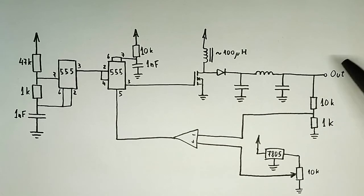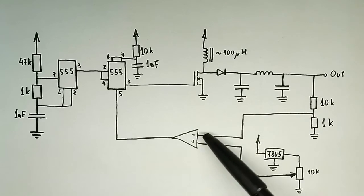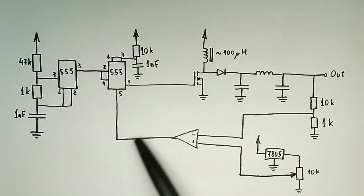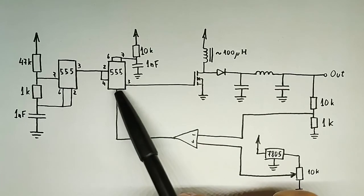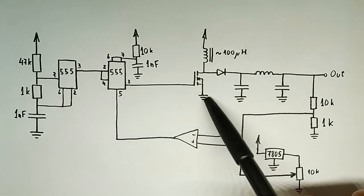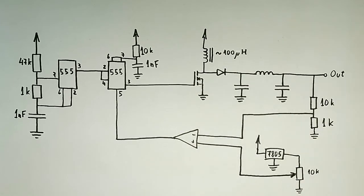Instead, if the output is too high, then the inverting input will have a higher voltage than the non-inverting input, which will drop the control voltage and also reduce the PWM duty cycle, which reduces the output voltage. So this is a feedback loop that regulates itself.